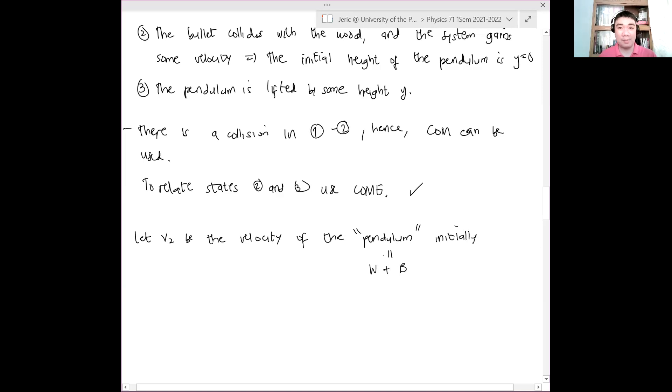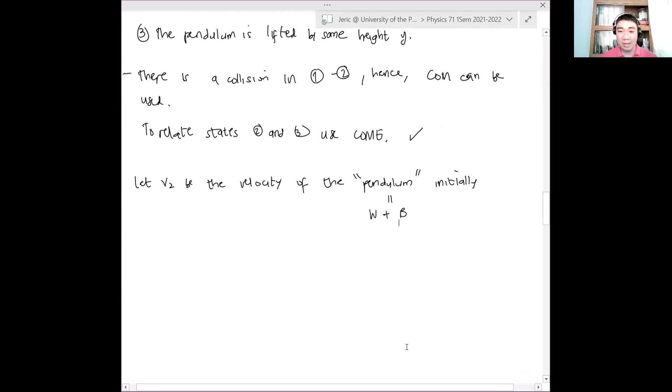Just to be clear, because I could say, the pendulum was initially at rest. What I'm saying here is that the pendulum is the combined wood and bullet, just to clarify. Okay? So by conservation of energy, E2, the energy at state two, is equal to the energy at state three.